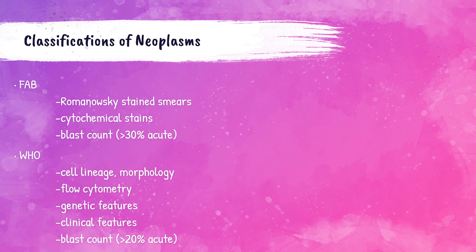There are two hematopoietic malignancy classification systems: FAB and WHO. The French-American-British (FAB) classification uses Romanowski stain smears and cytochemical stainings based on cellular morphology, classifying acute leukemias as having greater than 30% blast cells. The WHO classification uses cell morphology and flow cytometry — a technique that detects and measures physical and chemical characteristics of a cell population — and classifies acute leukemias as having greater than 20% blast cells. The WHO classification is the current standard for diagnosis.